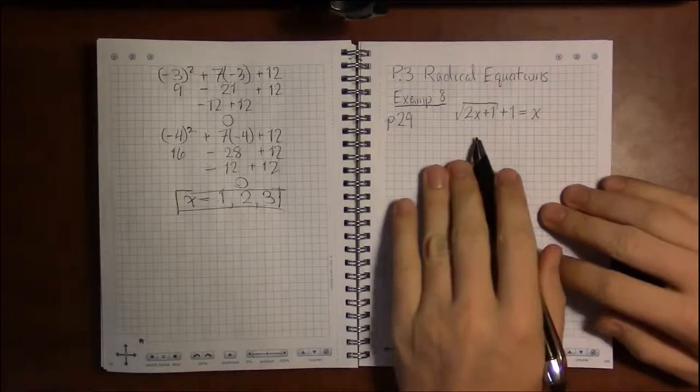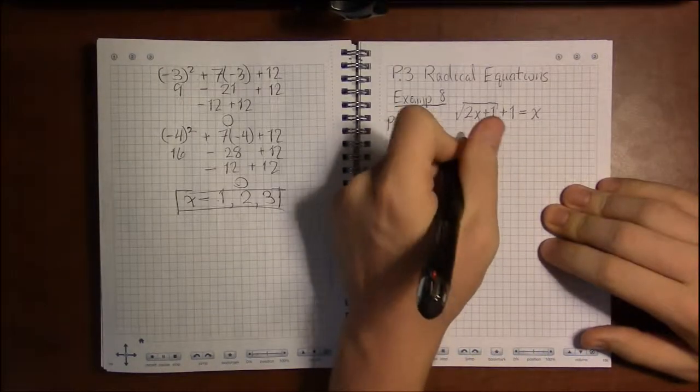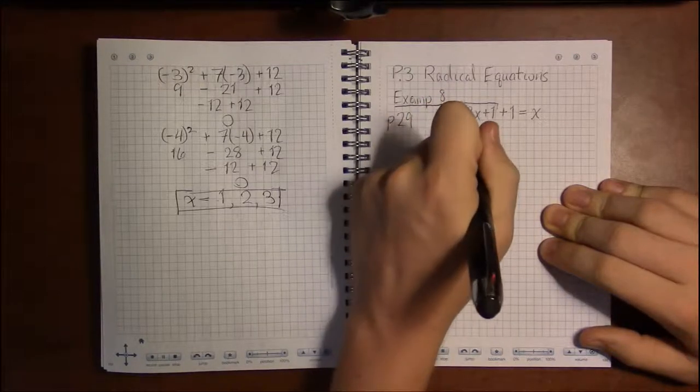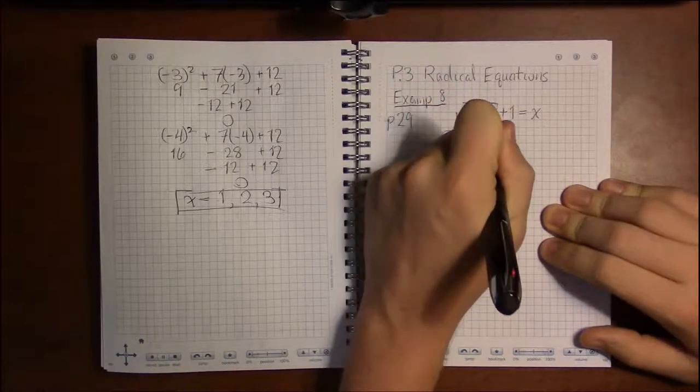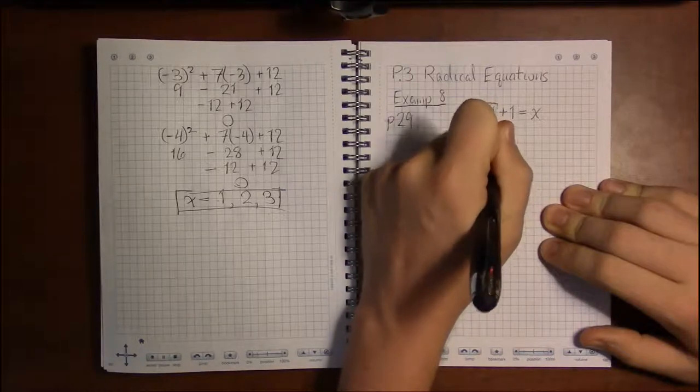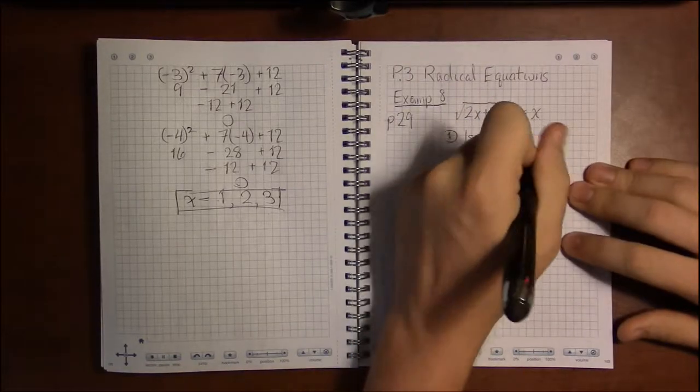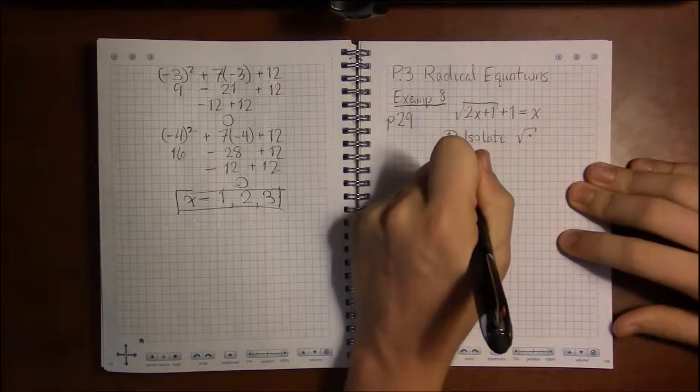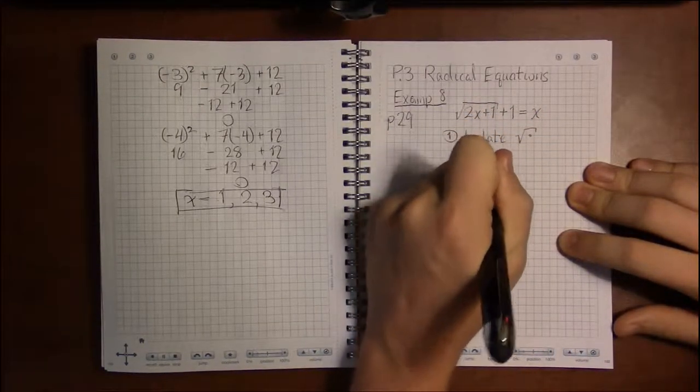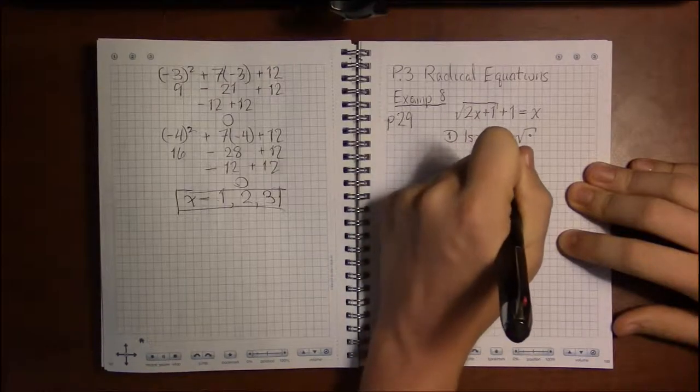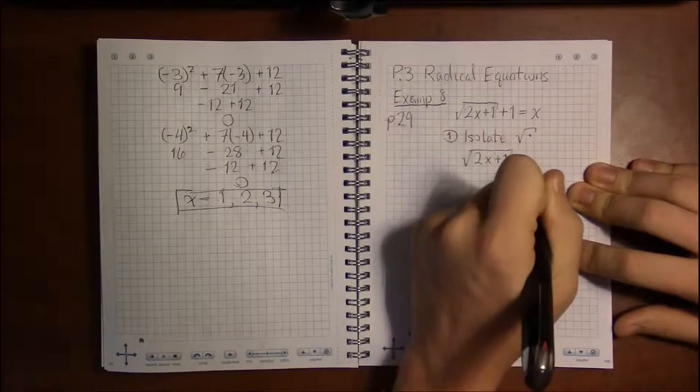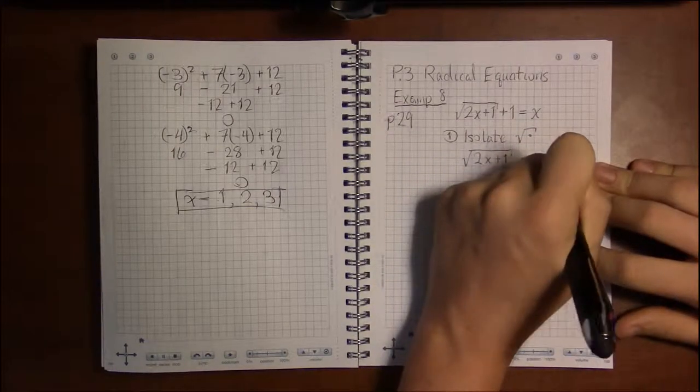Now, the way to deal with these is to start off by isolating the radical. So in this case, we'll want to subtract 1 from both sides. And in doing so, we get the square root of 2x plus 1 all by itself. And then on the right-hand side, we have x minus 1.